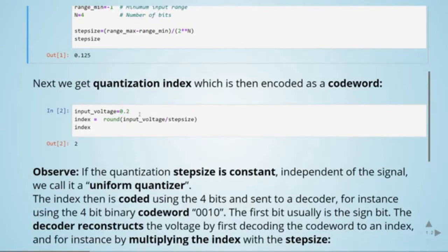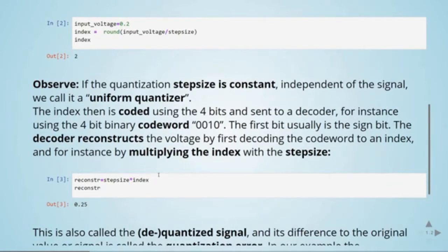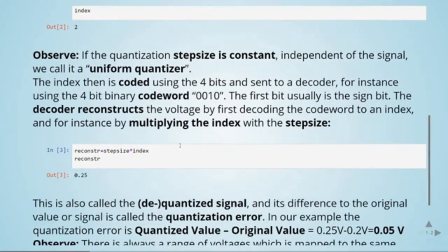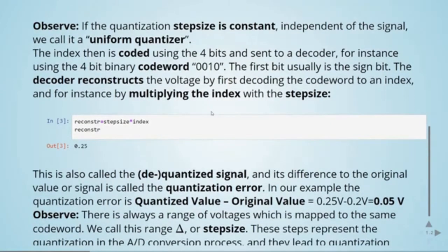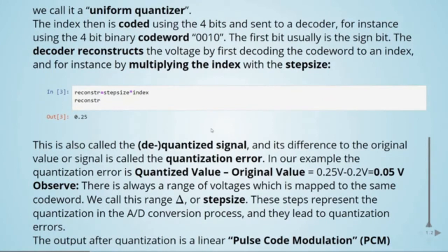This index is later coded using the 4 bits and sent to a decoder. We can code index 2 using the 4-bit binary codeword 0010, and the decoder will reconstruct the voltage by first decoding the codeword to an index — so from 0010 back to index 2 — then multiplying the index by the step size, giving a reconstructed value of 0.25. This is the dequantized signal, and we can see it is already different from our original input of 0.2 volts. This difference is called the quantization error.